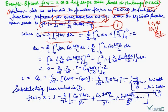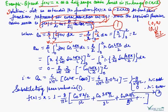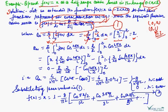Substituting l = 2, we compute a₀ = (2/l) integral from 0 to l of f(x) dx = (2/2) integral from 0 to 2 of x dx = x²/2 with limit 0 to 2. After substituting the limits, we get a₀ = 2.